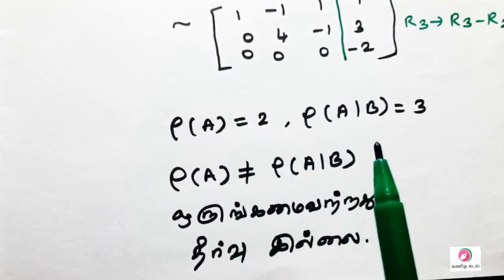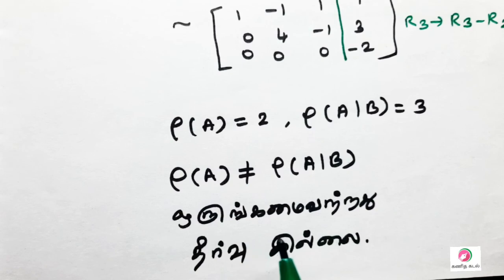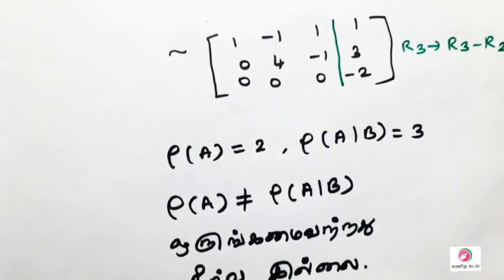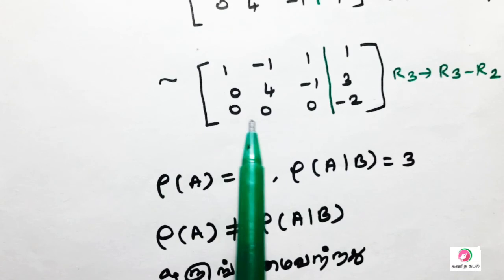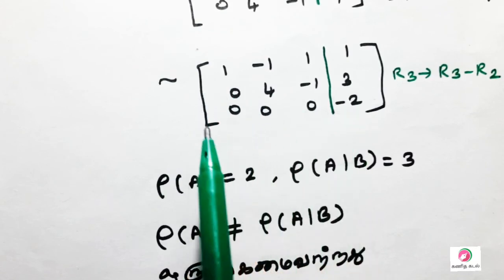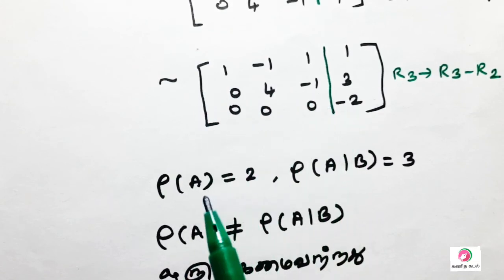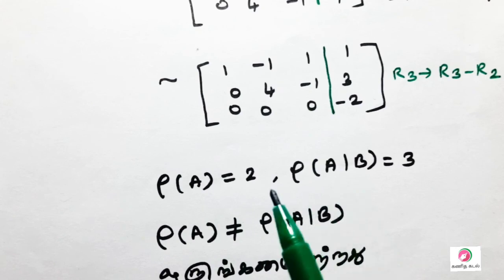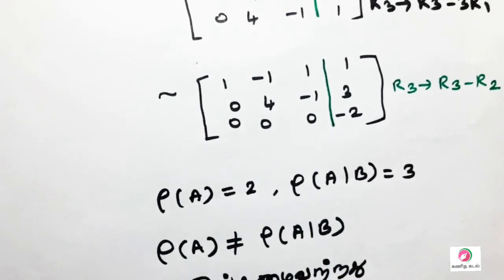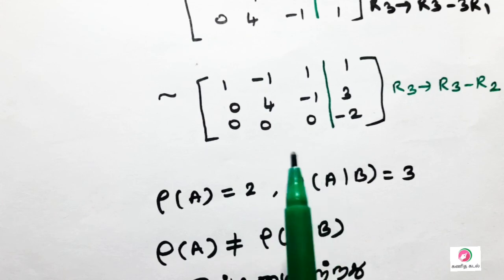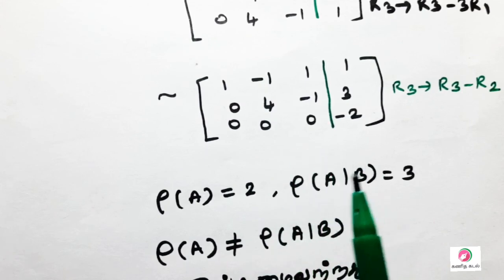Rank of A and rank of A|B are the key. This is the Echelon Form, which is very important. Thank you very much.